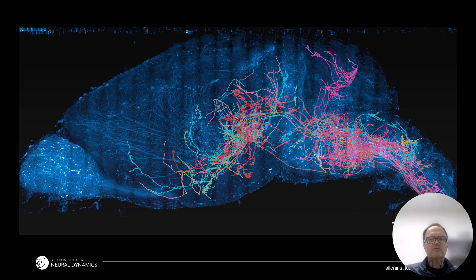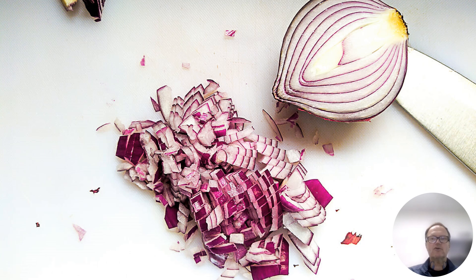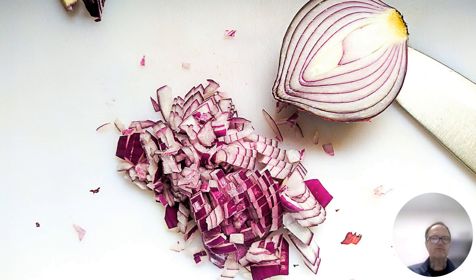Traditional microscopes with high resolutions — that is, those that can resolve tiny structures like axons — have small fields of view so that they see only a tiny part of the specimen at once. This means that large samples traditionally have to be chopped into parts to be imaged, like a diced onion. Each piece has to be imaged separately and the images assembled together computationally. Because the dicing distorts the pieces, the parts are difficult to put together and many errors are introduced at the interfaces of the cuboids.